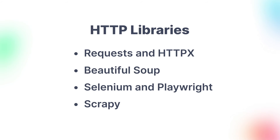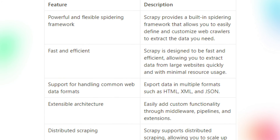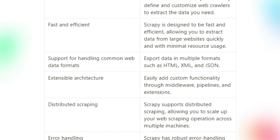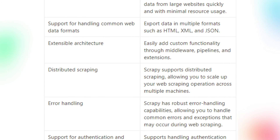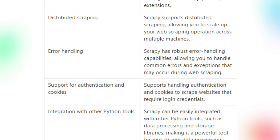Next up, we have the most popular and arguably most powerful web scraping framework for Python. If you find yourself needing to scrape large amounts of data regularly, then Scrapy could be a great option. The Scrapy framework offers a full-fledged suite of tools to aid you even in the most complex scraping jobs. On top of its superior performance when compared to BeautifulSoup, Scrapy can also be easily integrated into other data processing Python tools and even other libraries such as Playwright. It comes with a handy collection of built-in features catered specifically to web scraping, such as a powerful and flexible spidering framework, support for handling common web data formats, extensible architecture, distributed scraping, error handling, support for authentication and cookies, and integration with other Python tools.